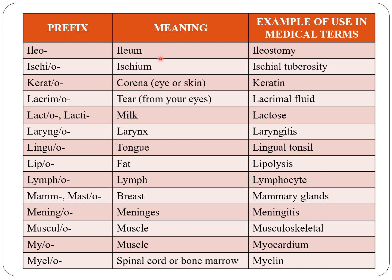Ilio indicates ileum. Ischio indicates ischium, as in ischial tuberosity. Kerato indicates cornea. Lacrimo indicates tear. Lacto or lacti indicates milk. Laryngo indicates larynx. Linguo indicates tongue. Lipo indicates fat. Lympho indicates lymph, as in lymphocyte.